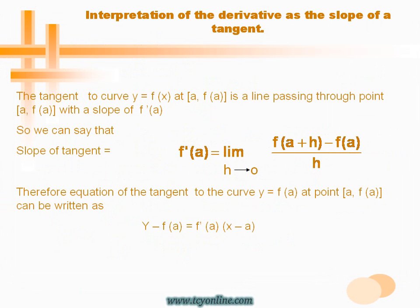Now let's learn how to find the equation of a tangent to a curve. As we know, the derivative of a function representing a curve gives us the slope of the tangent to that curve. Here we need to find the equation of the tangent to the curve y equals f(x) at a given point. Simply plug in the values of slope in the point-slope form of a line, so as to get the equation of the tangent to the curve.